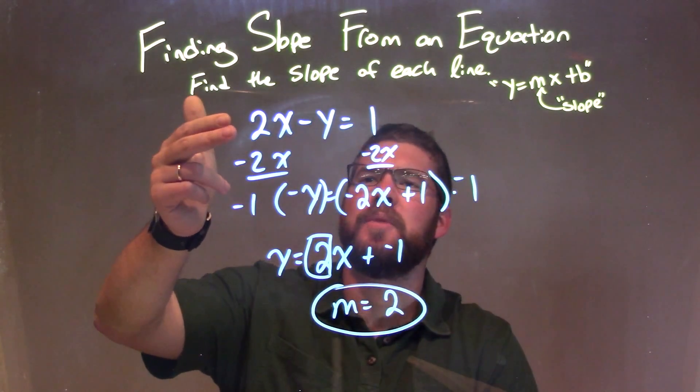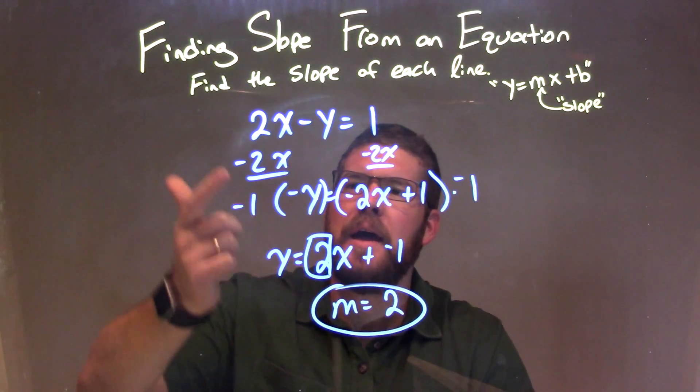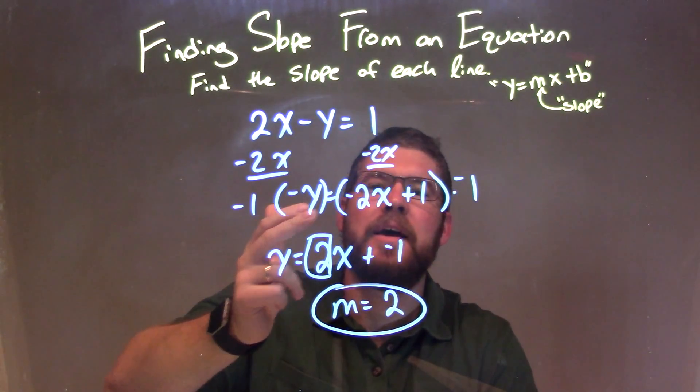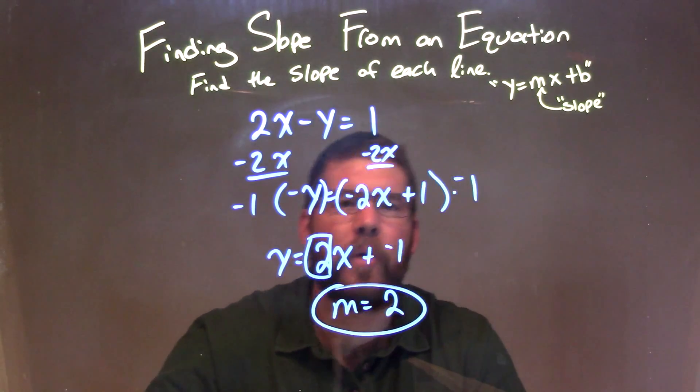Let's recap. We're given 2x minus y equals 1. I subtracted 2x from both sides, giving me negative y on the left, equal to negative 2x plus 1 on the right.